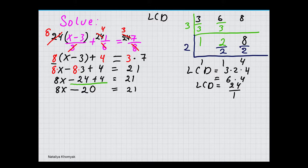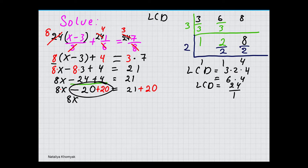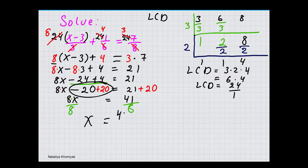Now that each side is simplified as much as possible, we are going to solve. 8x minus 20 — that is a multiplication and a subtraction, so we undo subtraction first by doing plus 20 on both sides. Whatever you do to one side, you do the same to the other. So 8x equals 21 plus 20, which is 41. x is being multiplied by 8, so the opposite is to divide by 8 on both sides. So x equals 41/8. And this is our solution.